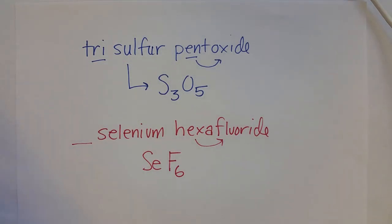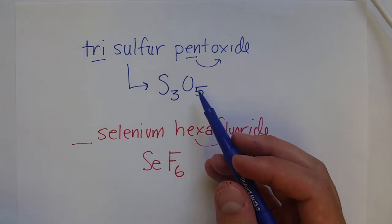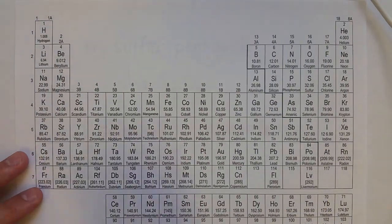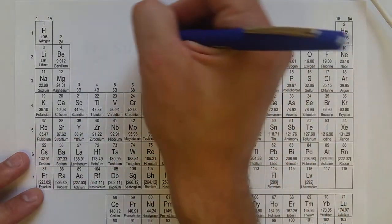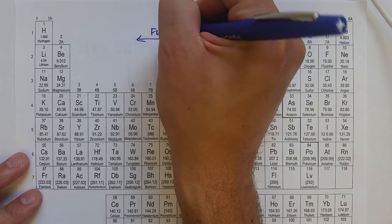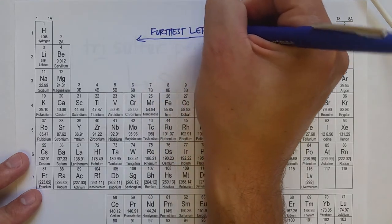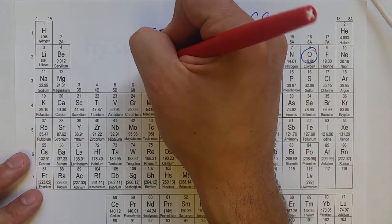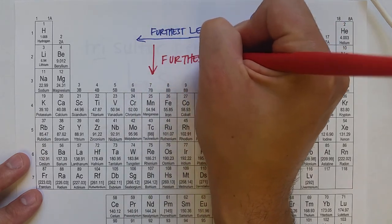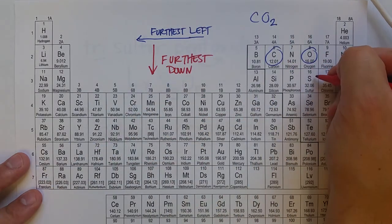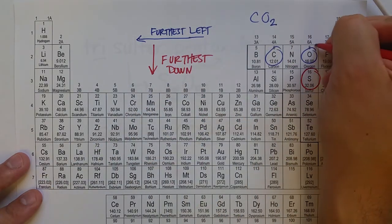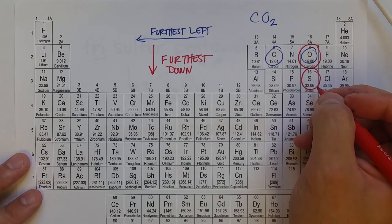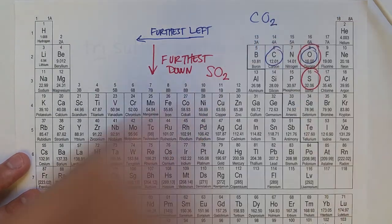One additional consideration we have to remember is which order we write these. For ionic compounds, it was always cation, then the anion. In this scenario, the periodic table is going to tell us where to go. So the element that's furthest left goes first. That's why if we had a compound between carbon and oxygen, carbon went first, as in CO2. And then the other scenario is the furthest down is also first. So in case you have two elements in the same column, so neither one's furthest left, you always go with the one on the bottom. So sulfur dioxide would always be written as SO2, not O2S.